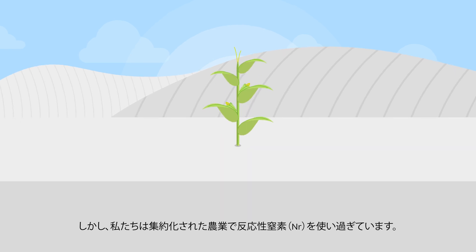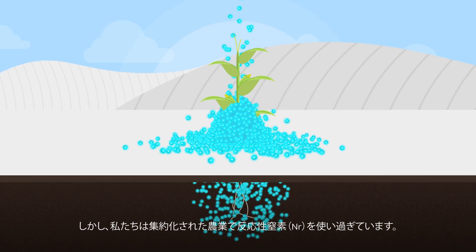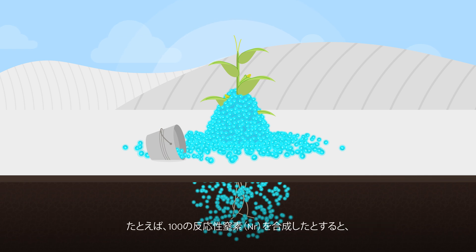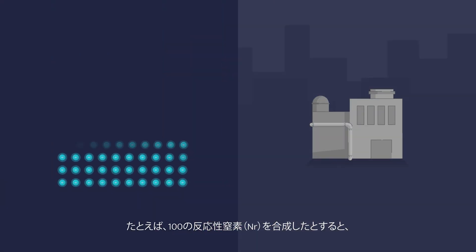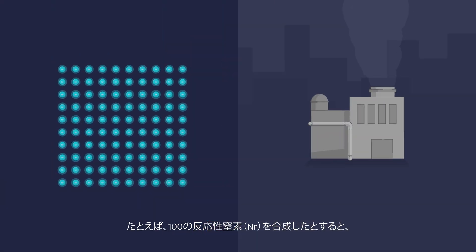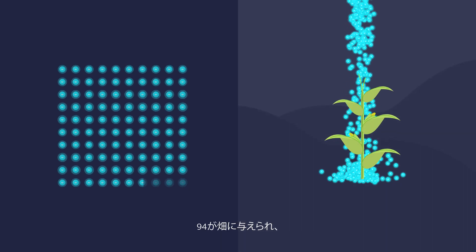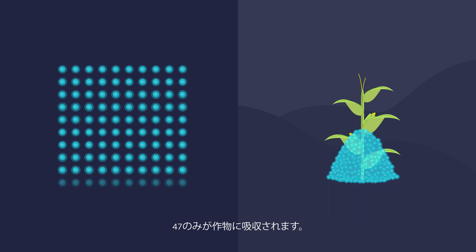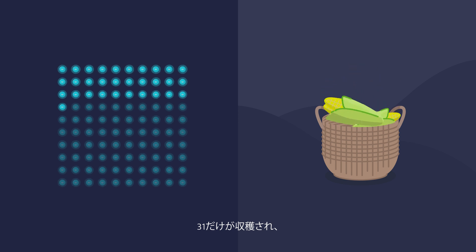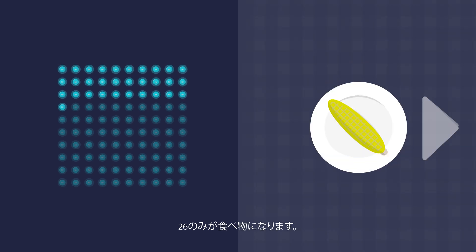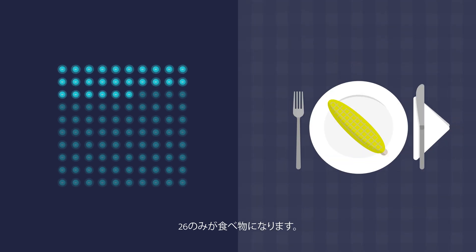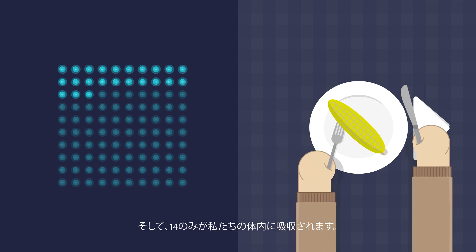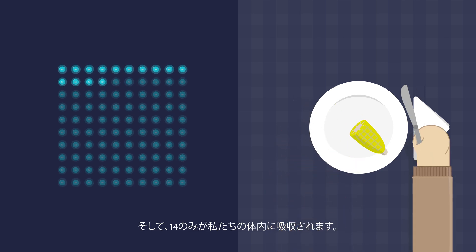But we use too much reactive nitrogen in intensive agriculture. For example, out of 100 molecules of reactive nitrogen produced, only 94 are applied to the crop. But only 47 are taken up by the crop. Only 31 are harvested. Only 26 go to the food, and only 14 are absorbed into our organism. And that's for a vegetarian diet.